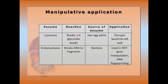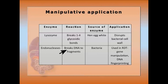Manipulative and research applications: lysozyme from hen egg white breaks down 1,4-glycosidic linkages and is used to disrupt bacterial cells in microbiological and other research. Endonucleases, called restriction enzymes, break down DNA at specific sites; they are found in bacteria as a safeguard mechanism, but are used in recombinant DNA technology and DNA fingerprinting.